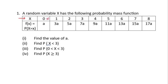The probability at x = 0 is a, at x = 1 it is 3a, at x = 2 it is 5a, and so on. X takes values 0, 1, 2, 3 up to 8, and their corresponding probabilities are a, 3a, 5a, going up to 17a. The first question is to find the value of a. Since this is a PMF for a discrete random variable, we use summation rather than integration.